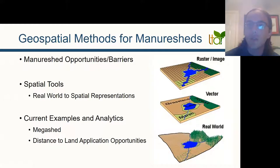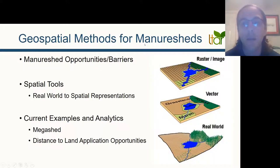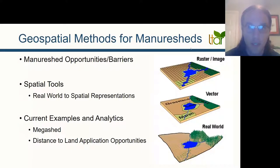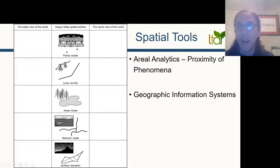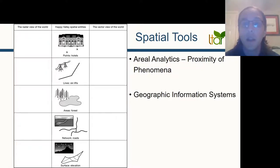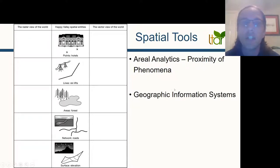Some of the tools we're using are shown on the right — we're going to talk about rasters and vectors and how we use them to represent the real world. We often perform what are called areal analytics or proximity analyses to various phenomena, and we use Geographic Information Systems, or GIS, to do these types of analyses.